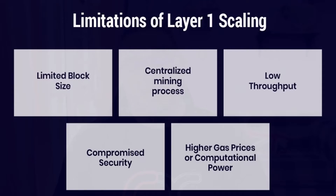Layer one chains settle every transaction that happens in the network. Unfortunately, this has led to scalability problems and high fees when there are many transactions taking place. We've seen this recently with Ethereum — I was using Uniswap and at times the transaction fees were somewhere between fifty to a hundred dollars per transaction.